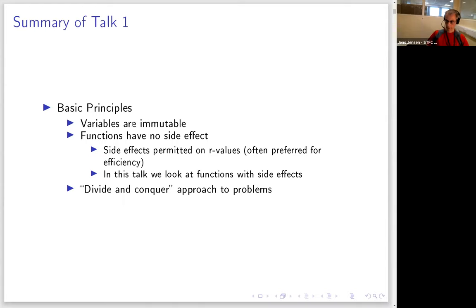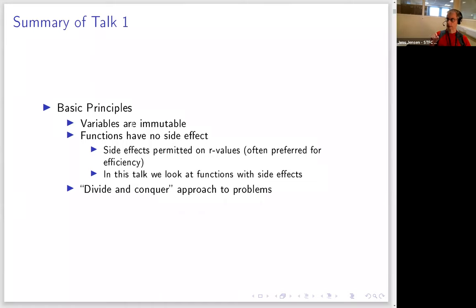To give a brief summary of talk one: the basic principles of functional programming are that variables are immutable, functions usually do not have side effects, and you can divide and conquer to approach problems. We permit side effects either when the function inherently has them, or when acting on a value that can't be seen by anyone else — like a temporary list — where it may actually be more efficient to destructively modify it rather than creating a new one.